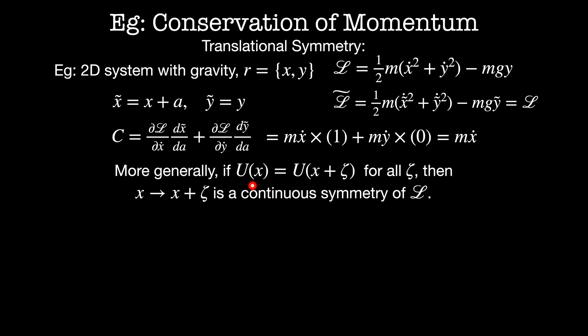More generally, if my potential energy u of x is equal to u of x plus zeta for all zeta, then x goes to x plus zeta is a continuous symmetry of the Lagrangian. It follows then that du by d zeta is equal to zero since the potential energy doesn't depend on the value of zeta. This tells us that the system is now force free in the x direction. This is the fundamental mathematical basis of Newton's first law. If there are no forces in a given direction, then its momentum must remain constant. This is another beautiful result that just comes out of the formalism of Lagrangian mechanics.